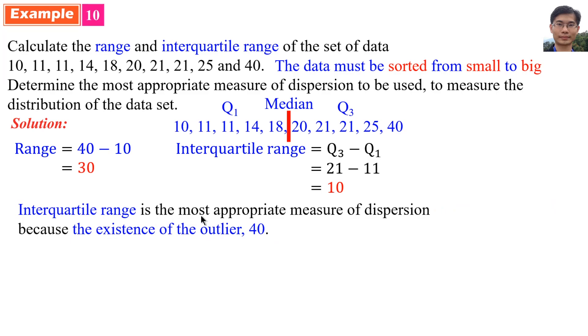Interquartile range is the most appropriate measure of dispersion because of the existence of the outlier 40.